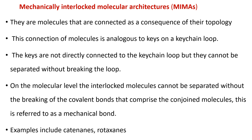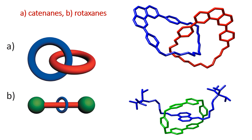Mechanically interlocked molecular architectures are molecules that are connected as a consequence of their topology. This is analogous to keys on a keychain loop — the keys are not directly connected to the loop but cannot be separated without breaking it. On the molecular level, the interlocked molecules cannot be separated without breaking the covalent bonds that comprise the conjoined molecules. This is referred to as a mechanical bond. Examples include catenanes and rotaxanes.